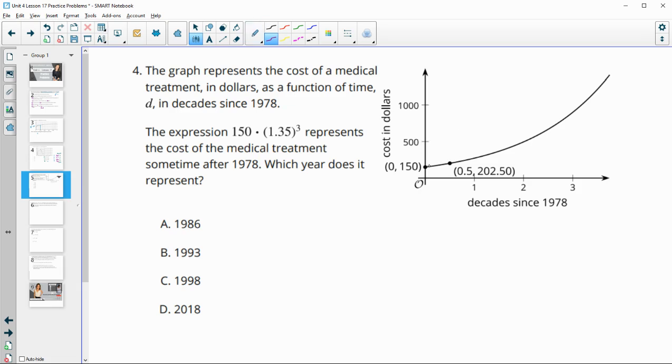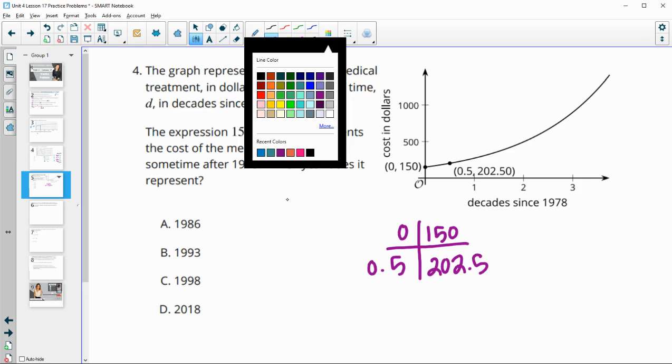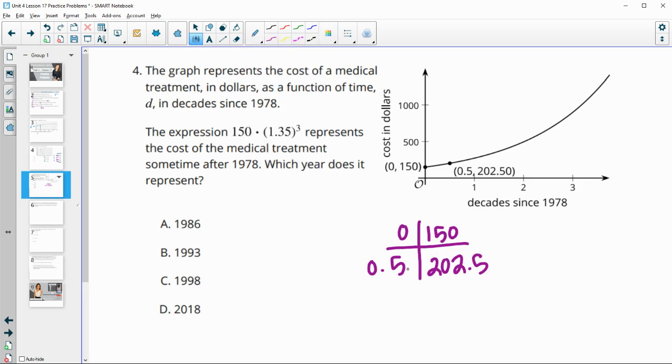So let's take a look at the ordered pair that they gave us. So they gave us 0 and 150, and they gave us 0.5 and 202.5. So if we take a look at the growth factor from this interval, if you do 202.5 divided by 150, you'll see that this has a growth factor of 1.35 on this interval.